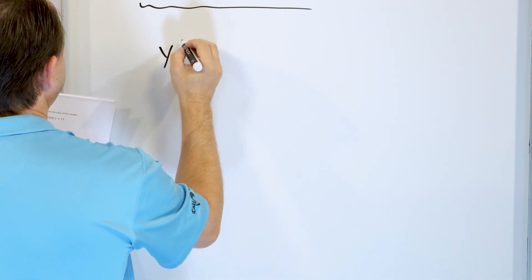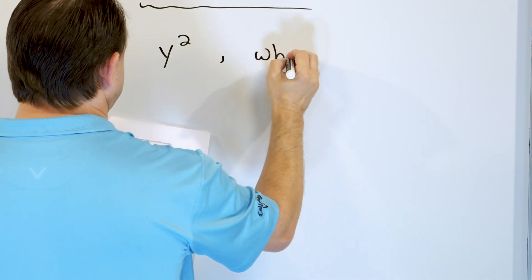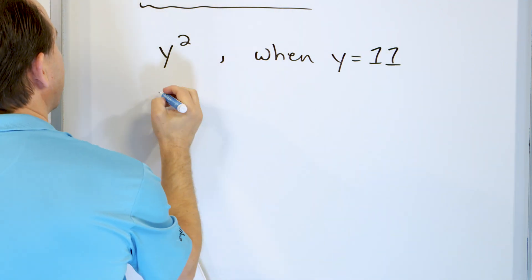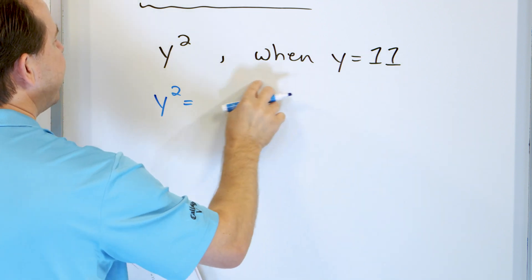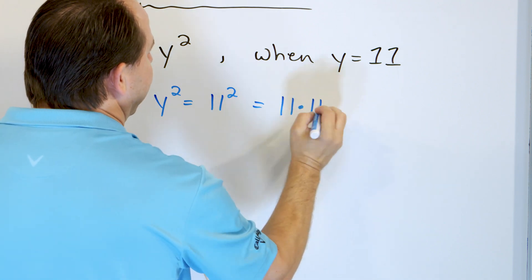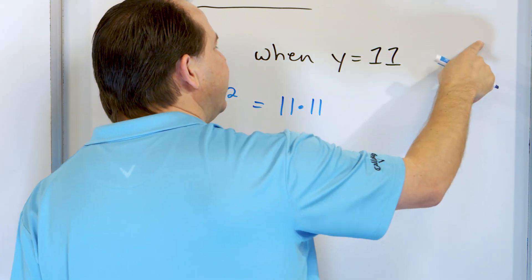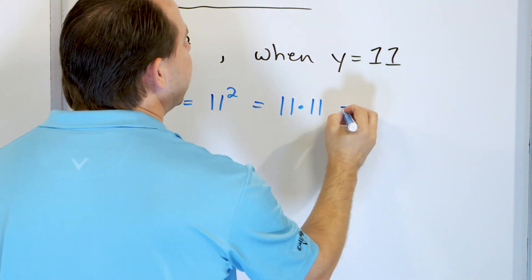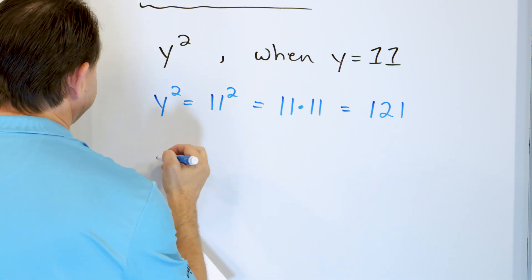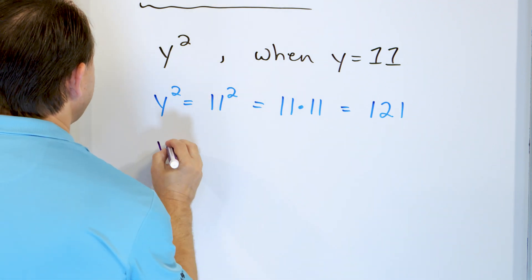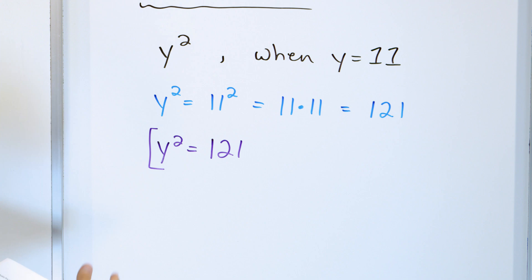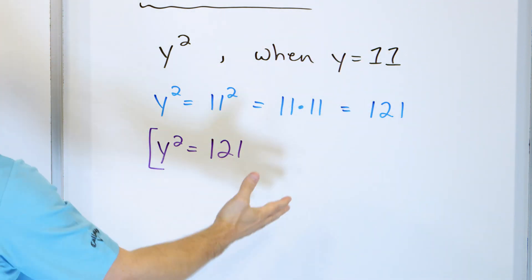Let's take a look at Y squared when Y is equal to 11. We're calculating Y squared — we can take that value of 11 and stick it in there and we have to square that. So that means 11 times 11. You can go off to the side and do 11 times 11, or you can use a calculator. What you'll find is 11 times 11 is 121. So Y squared is equal to 121, of course only when Y is equal to 11, which is what I gave you in the problem statement.